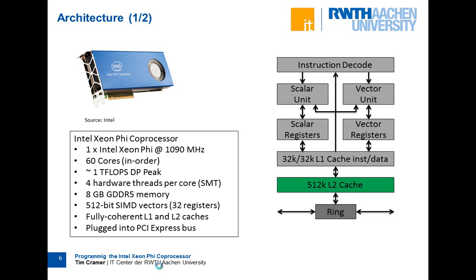We have 8 GB of GDDR5 memory in our devices, and I think 2 or 3 with 16 GB of main memory. Compared to a normal host CPU this is relatively limited, but it is fast memory because of the GDDR5 graphics memory. You also have fully coherent L1 and L2 caches, which I will come to in a minute.